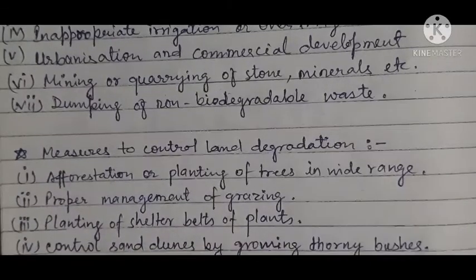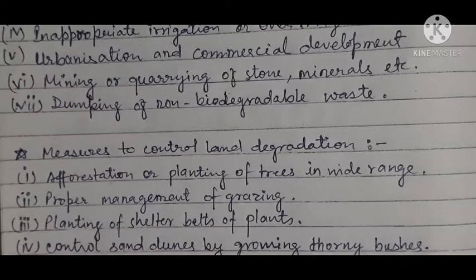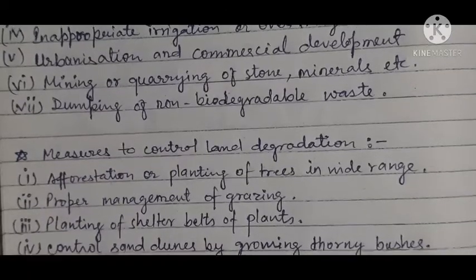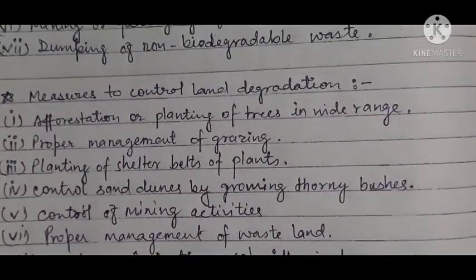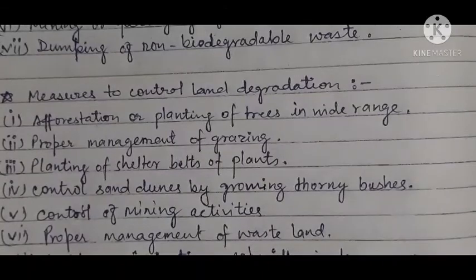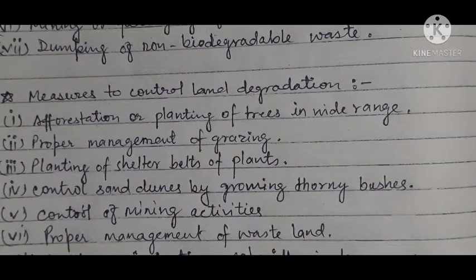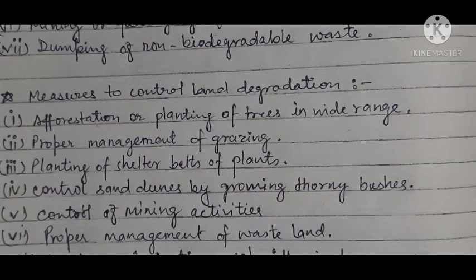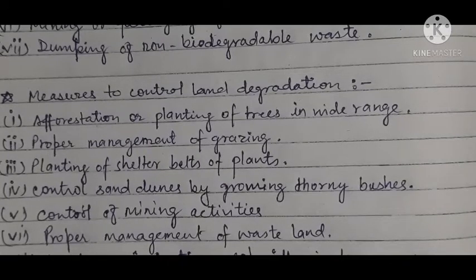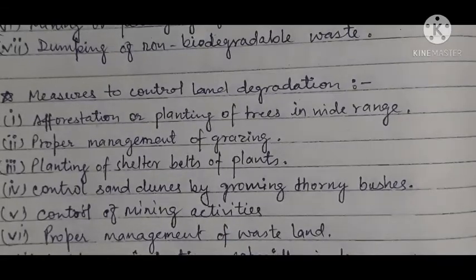Planting of shelter belts of plants — there should be shelter belts where only plants or trees are planted, so that slowly that area becomes cultivable. Next is control of sand dunes by growing thorny bushes. In areas with sand dunes, or where the top layer of soil is completely dry and the upper layer is about to erode due to wind — what we call weathering or erosional process — to stop that, we will grow thorny bushes. Growing thorny bushes helps a lot in stopping the wind and thereby controlling the erosion of the top layer of soil.